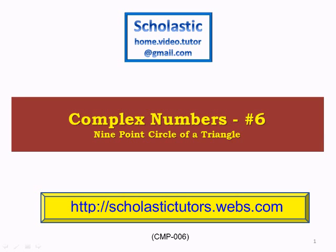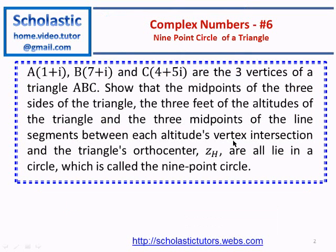Hi, welcome back. Complex numbers, nine point circle of a triangle. A(1+i), B(7+i), and C(4+5i) are the three vertices of a triangle ABC. Show that the midpoints of the three sides of the triangle, the three feet of the altitudes of the triangle, and the three midpoints of the line segments between each altitude's vertex intersection and the triangle's orthocenter z_H, all lie in a circle which is called the nine point circle.